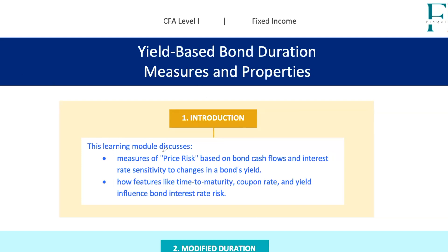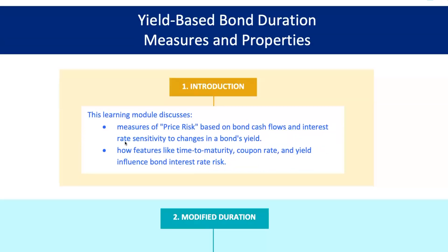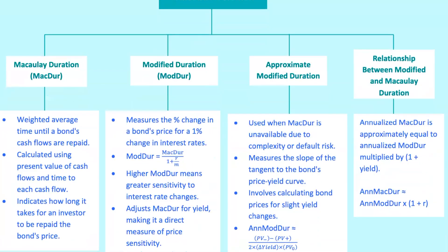Alright, future bond mavens, today we're jumping into the world of bond price risk and the various measures used to understand how sensitive a bond's price is to changes in interest rates. If you've ever wondered how a 1% change in interest rates could affect the price of your bond, or heard terms like modified duration or price value of a basis point, PVBP, and thought, what on earth does that mean? You're in the right place. Let's roll up our sleeves and break these concepts down one step at a time.